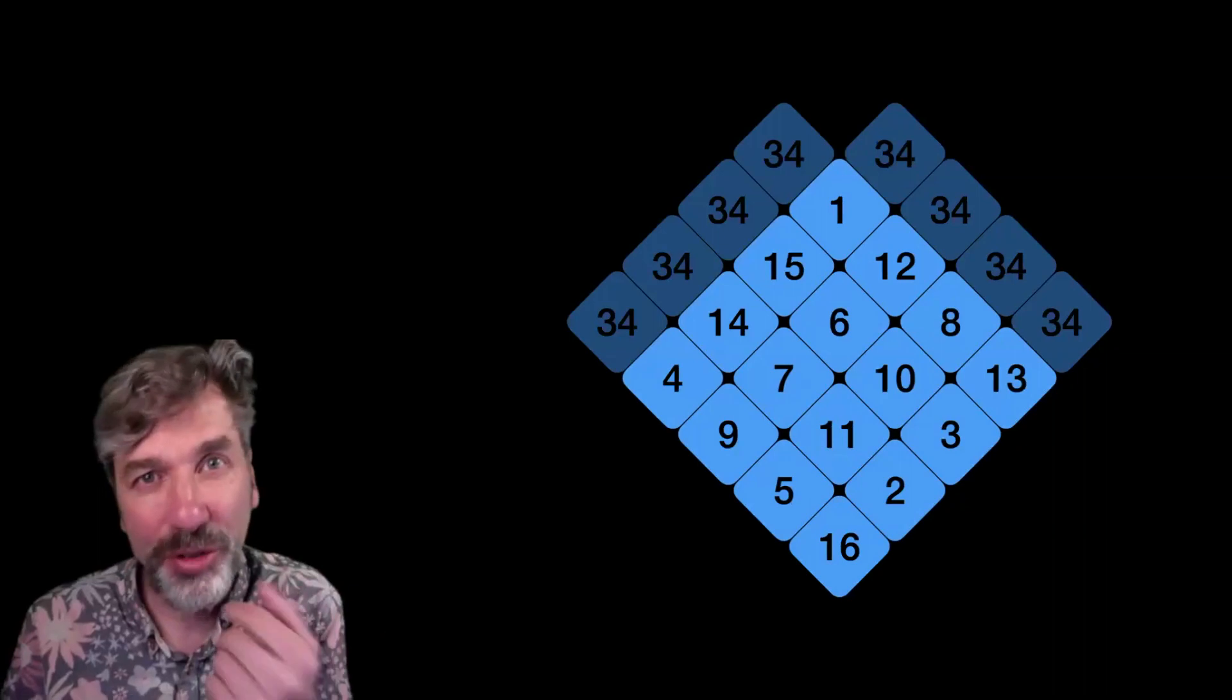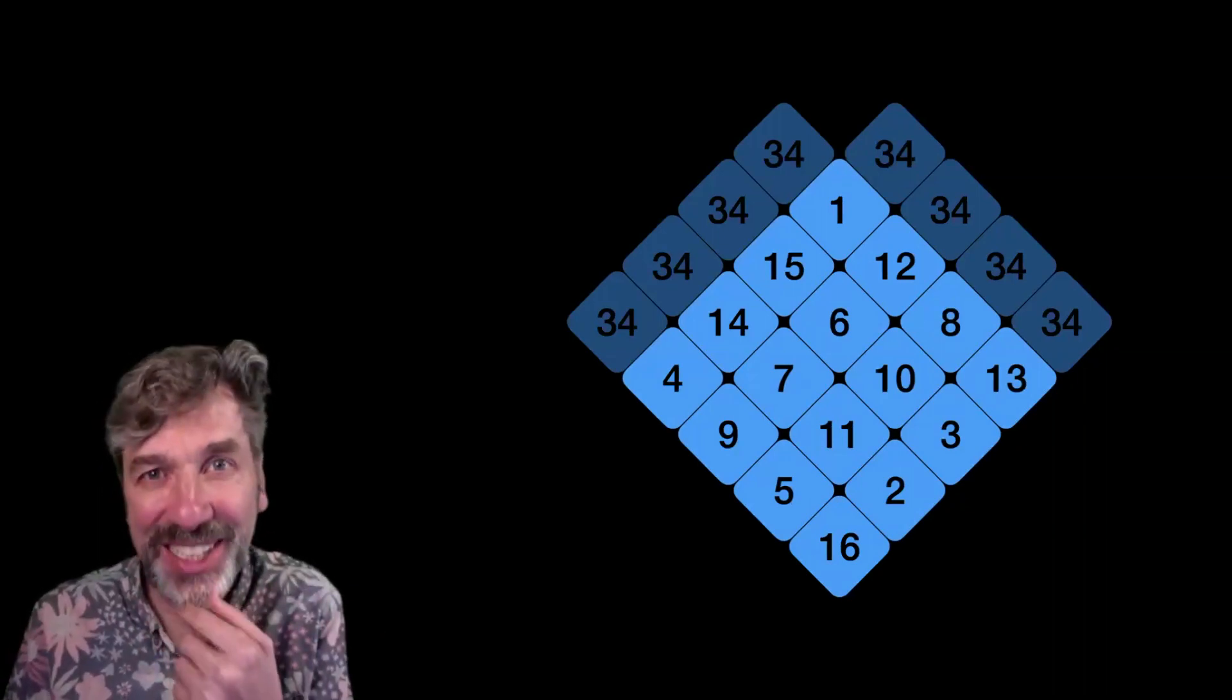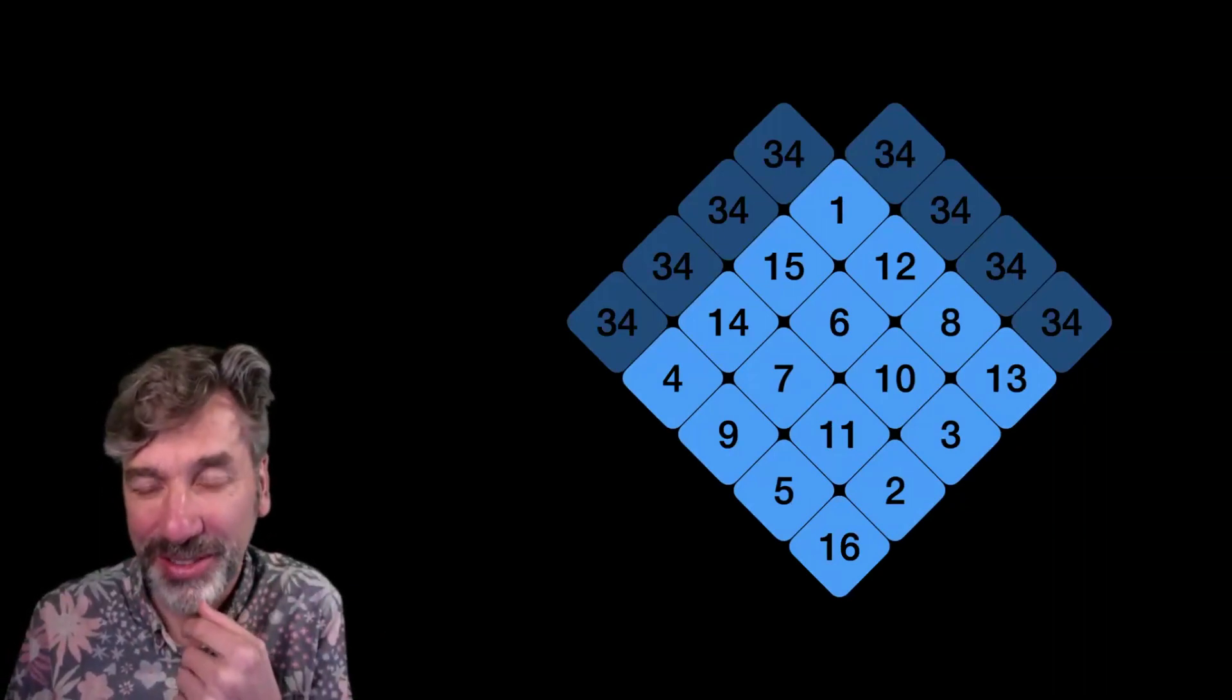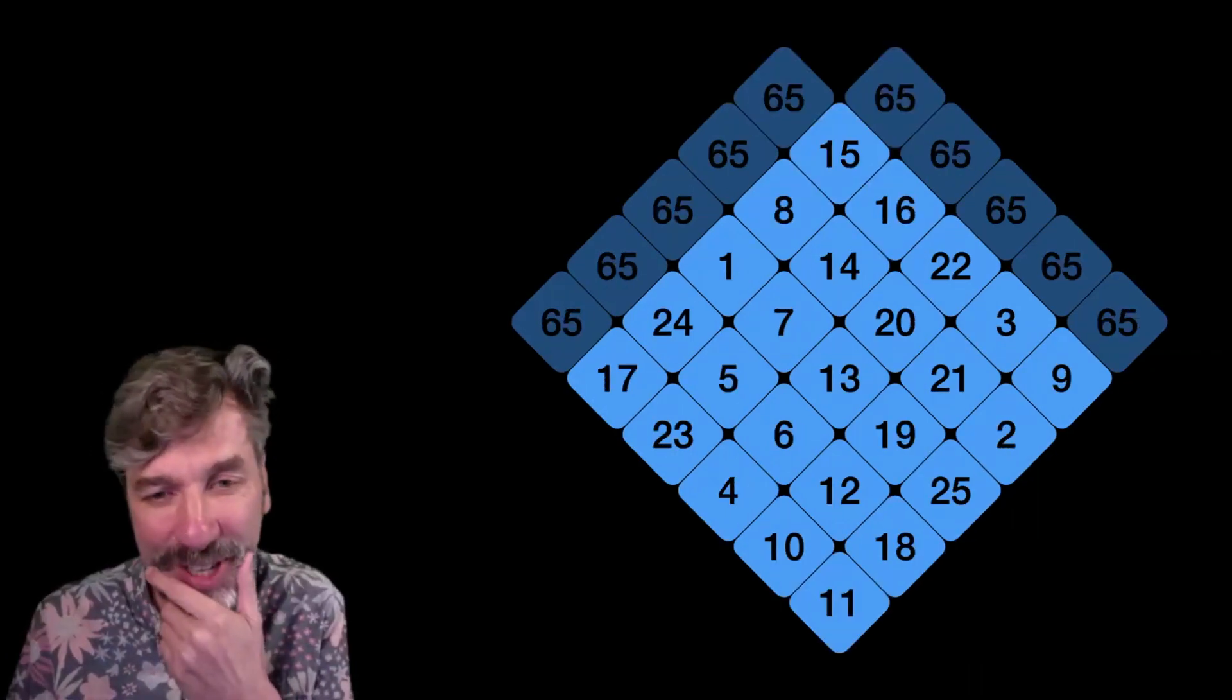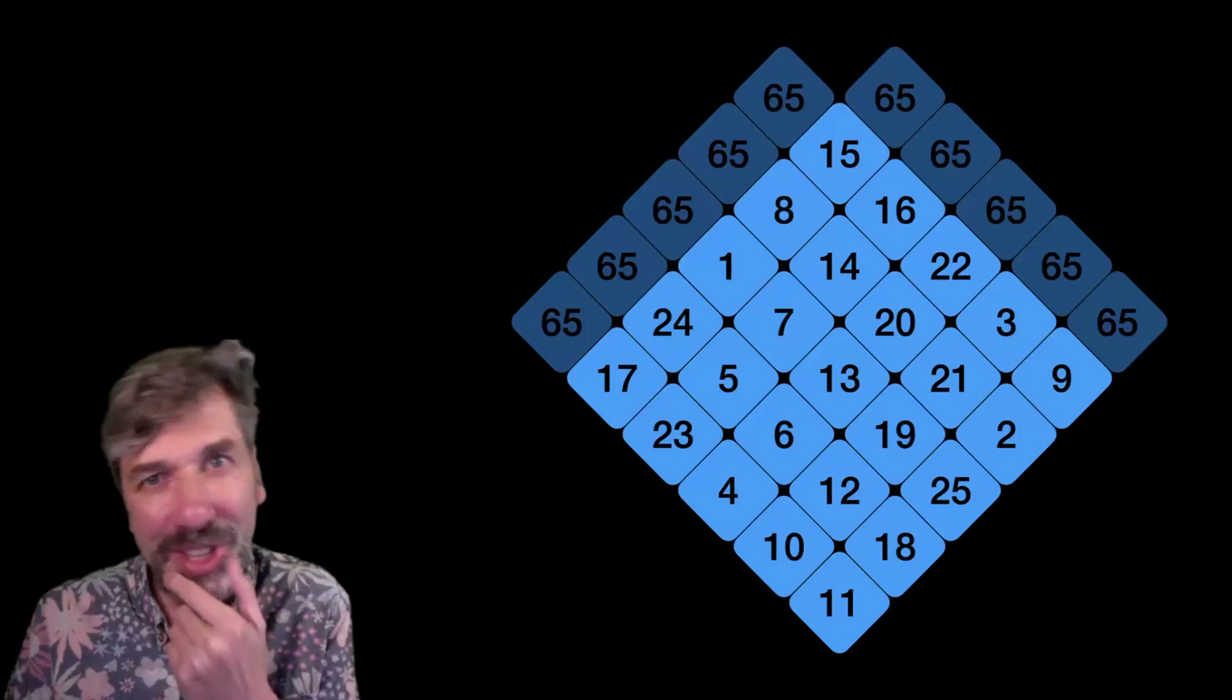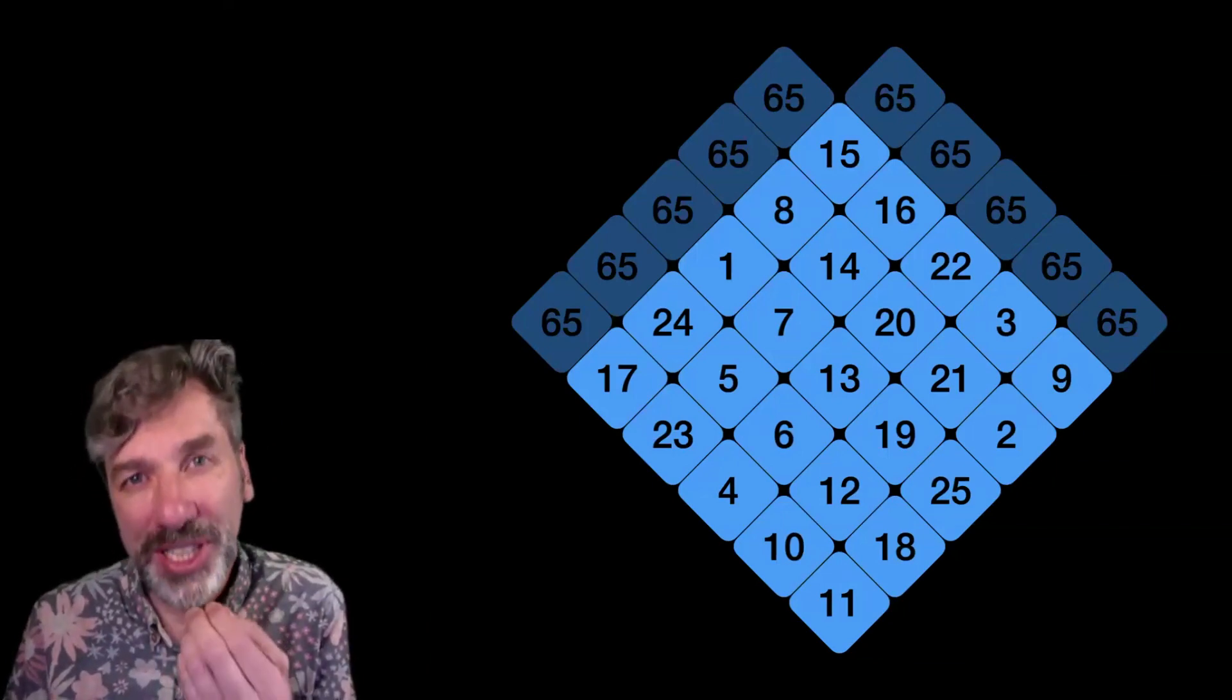You can look at this for a 4x4. This is again magic adding up to 34. The numbers 1 through 16. The numbers 1 through 25 adding up to 65. We're not going to do this. We're going to look at broken magic.